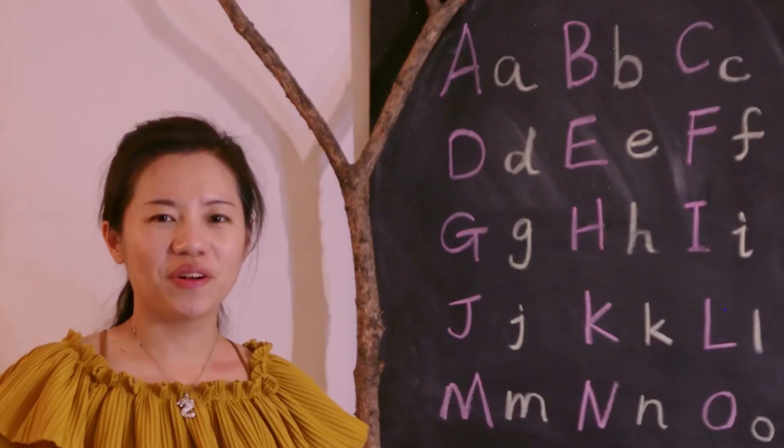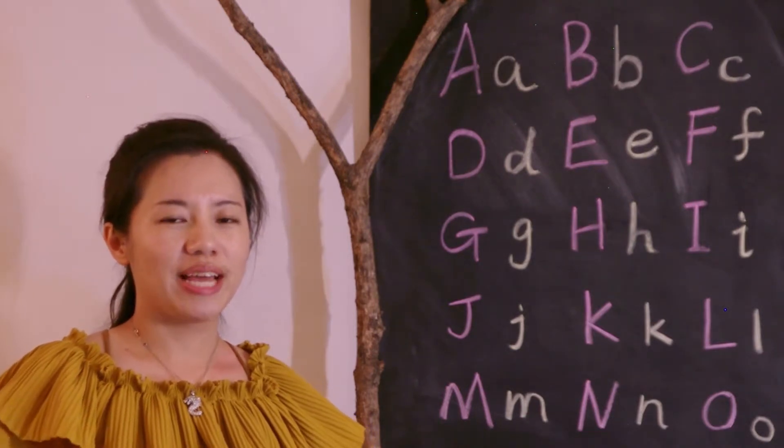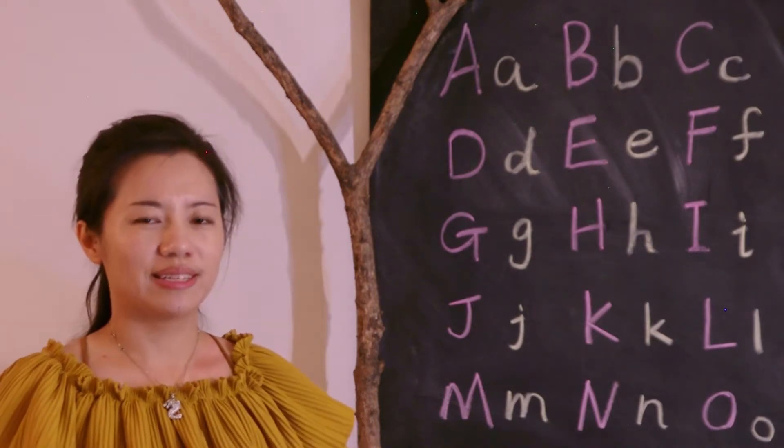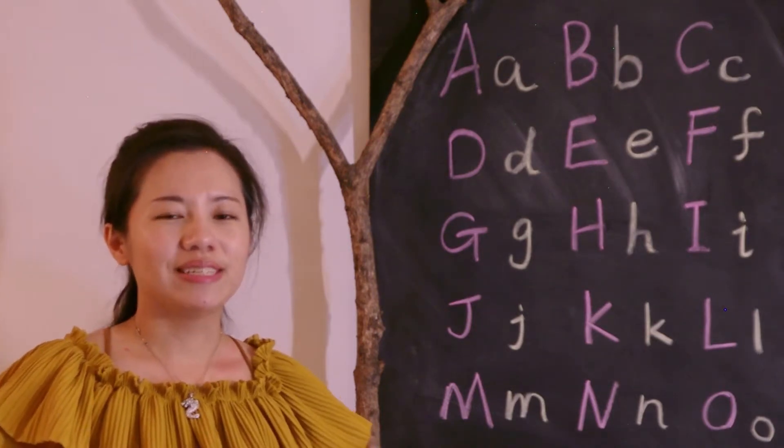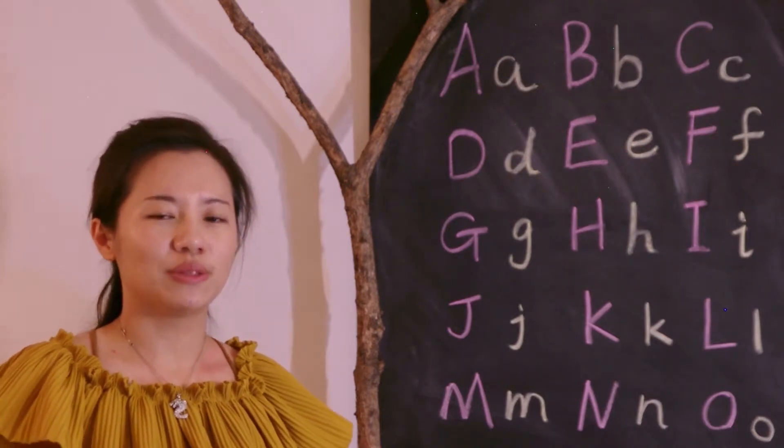Now let's learn the English alphabet from letters A to Z in both uppercase and lowercase. OK everyone, now let's start learning the English alphabet.